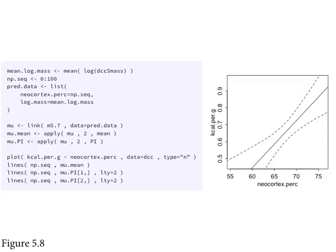For purely linear Gaussian models, it really doesn't matter what constant value you assign to the other predictors you're not plotting. The only thing that changes are the numbers on the vertical axis — it shifts the whole line up and down, because since it's constant across all x-axis values, it's just like changing the intercept. It's not a big decision you need to have any angst about.